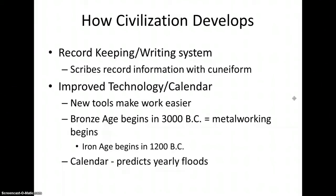People began to write about city events. There was also improved technology — new tools and techniques made work much easier. The Bronze Age started in Sumer around 3000 BC, marking the start of metalworking. People eventually replaced copper and stone with bronze to make tools and weapons. In 1200 BC, the Iron Age began. During this time period, calendars were also developed to predict yearly floods.